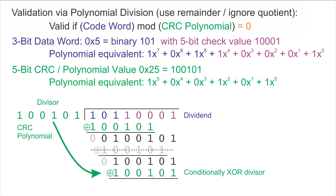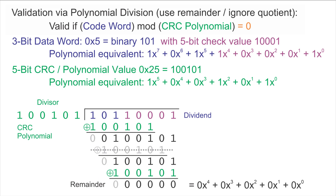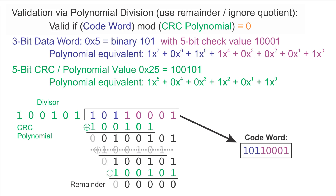We do one more trial XOR, and we find that that one will work, giving us a resulting remainder. As it turns out, this remainder is all zeros — 0x to the fourth plus 0x cubed plus 0x squared plus 0x plus 0. So we have a codeword and a remainder after dividing that codeword by the CRC polynomial of zero, which tells us that this is a valid codeword.